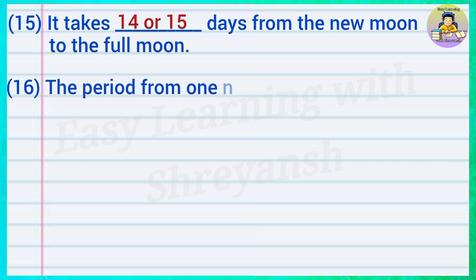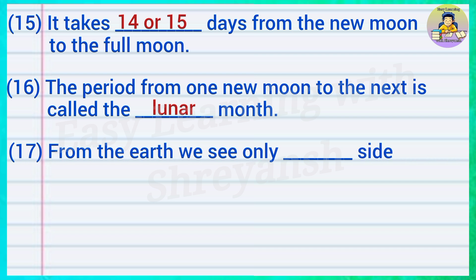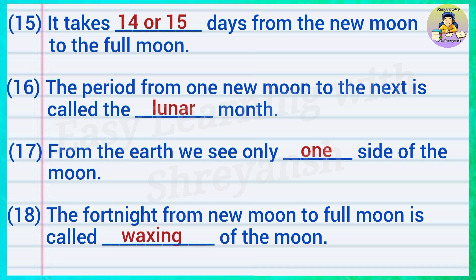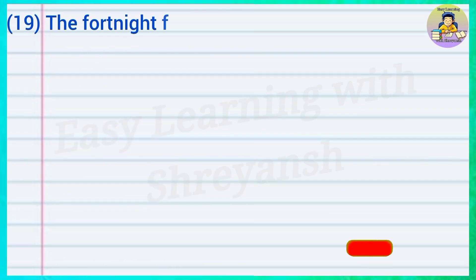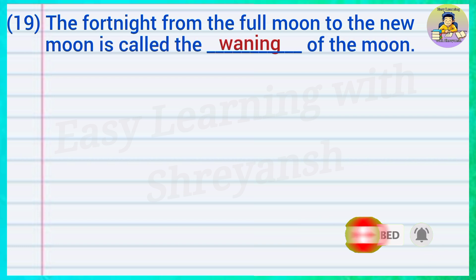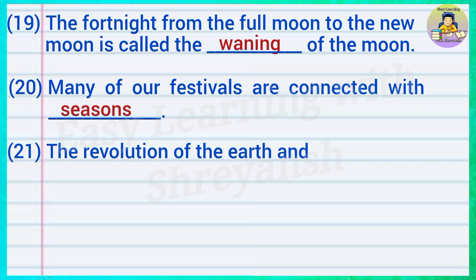Sixteen: The period from one new moon to the next is called the — moon; answer: lunar. Seventeen: From the earth we see only — side of the moon; answer: one. Eighteen: The fortnight from new moon to full moon is called — of the moon; answer: waxing. Many of our festivals are connected with — answer: seasons.